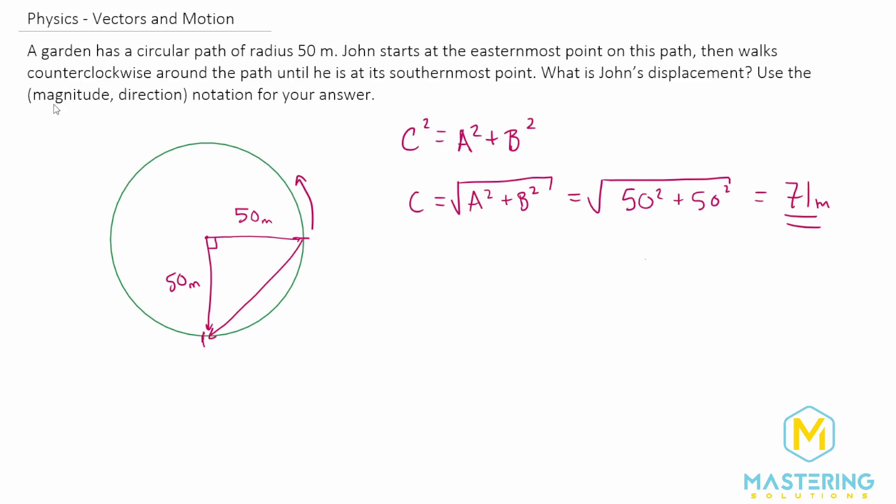But like I said they tell us that we have to not only have the magnitude but also the direction. Now in these special triangles where both of the legs are the same we know that that's going to be 45 degrees but we can confirm that by using trigonometry.